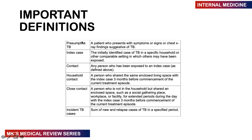A few important definitions: A presumptive case is where you have clinical suspicion — a patient with signs, symptoms, and chest X-ray findings very suggestive of TB. An index case is the initially identified case in a specific household or setting in which others may have been exposed. A household contact is a person who has shared the same enclosed space with the index case for three months before commencement of current treatment.